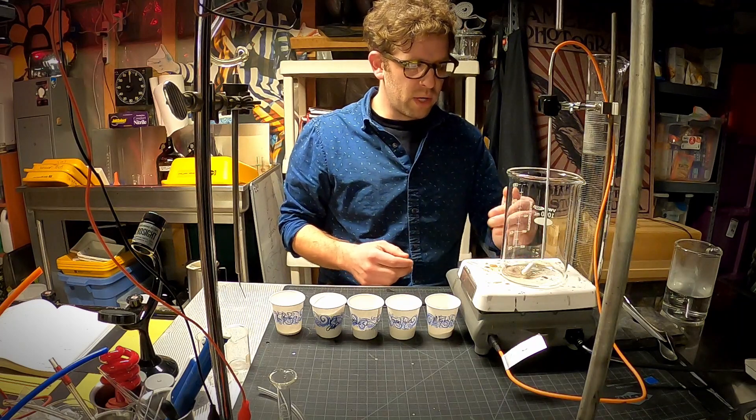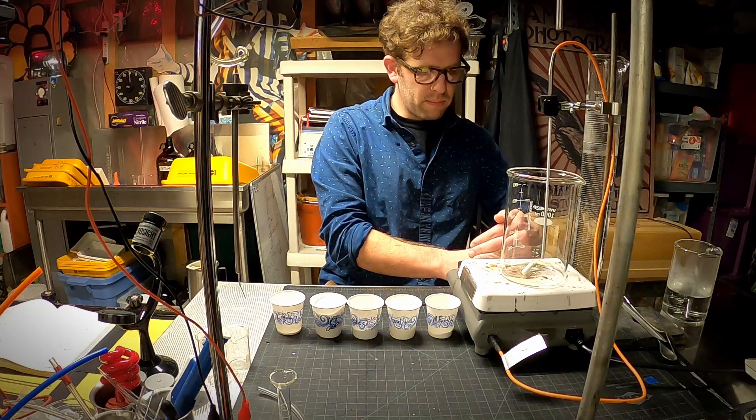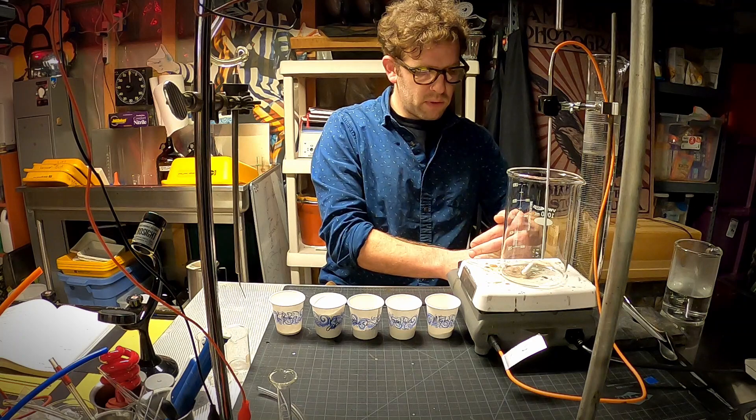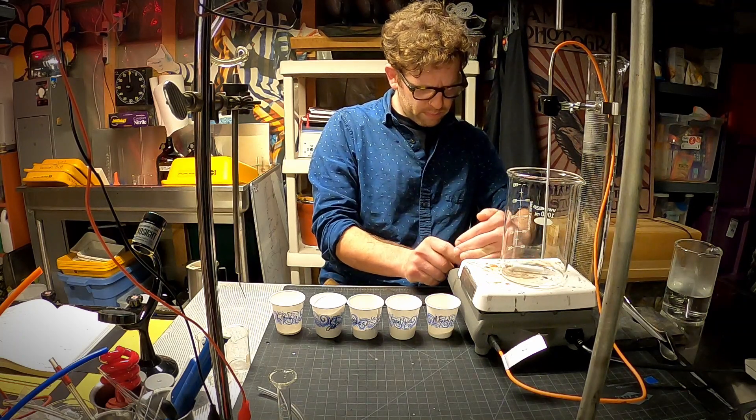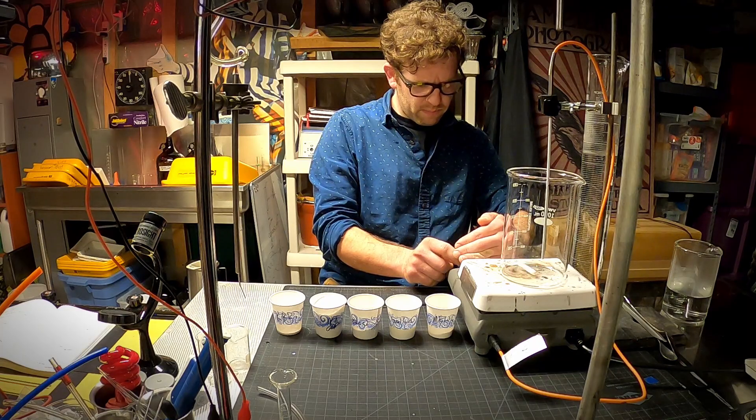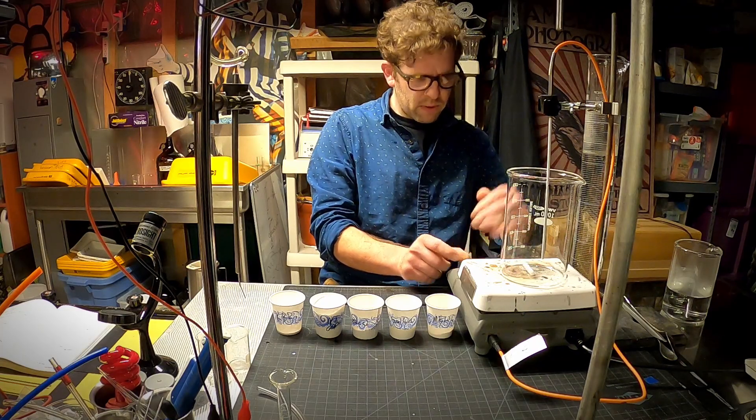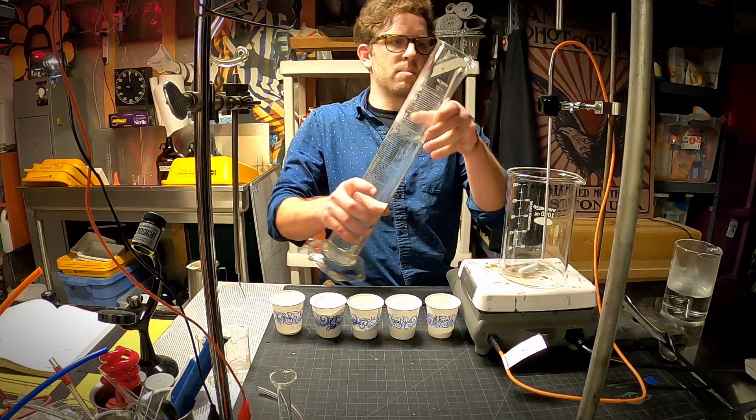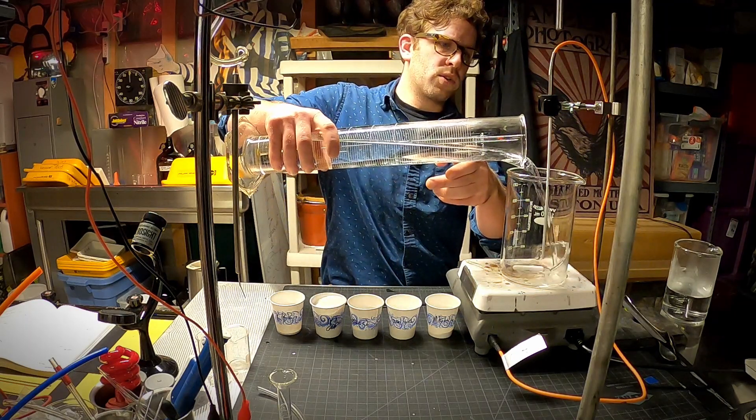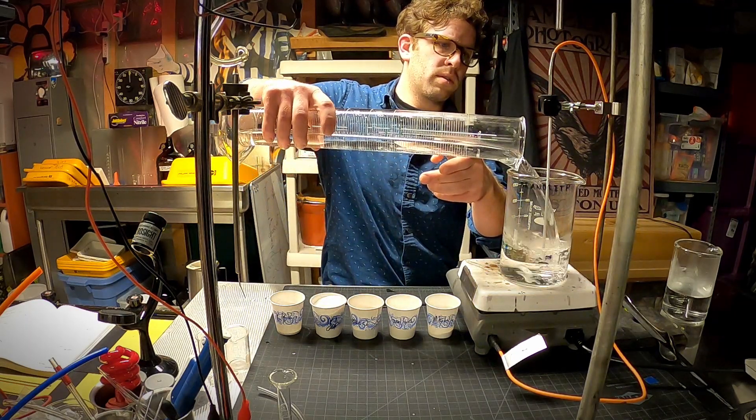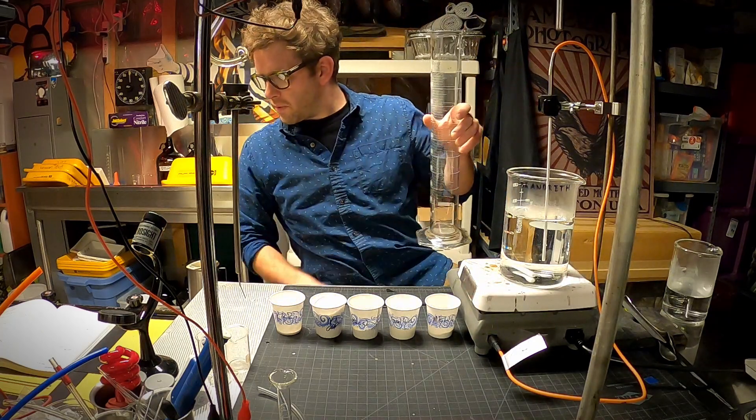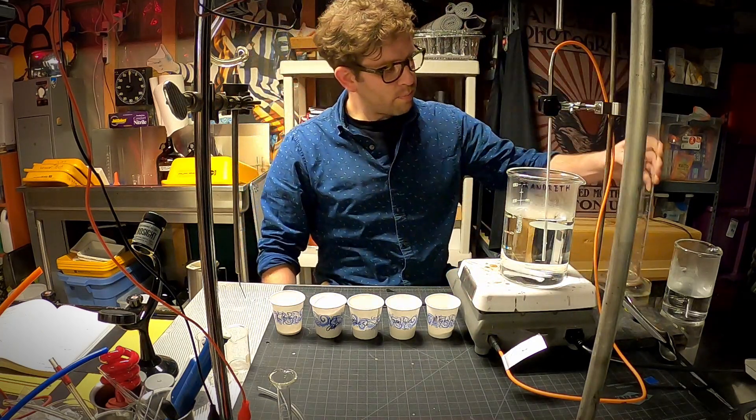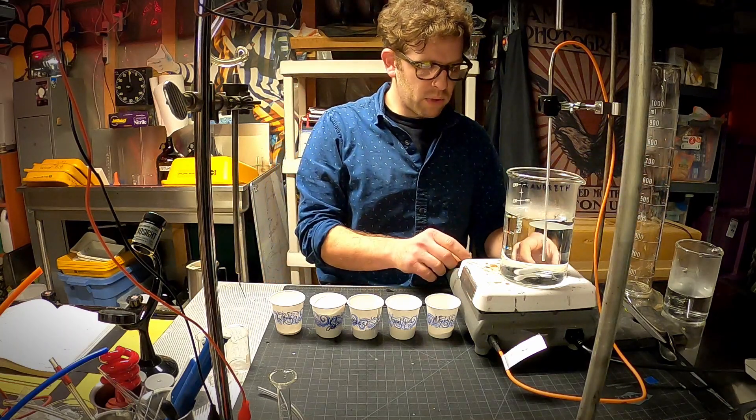We're going to use a hot plate stirrer here and I'm going to get this heated up, bring that up to 52 degrees Celsius. I'm going to get my stirrer moving. Now I'm going to put this in. This is my hot water, about 100 degrees Fahrenheit, 52 degrees Celsius. We're going to let this mix.